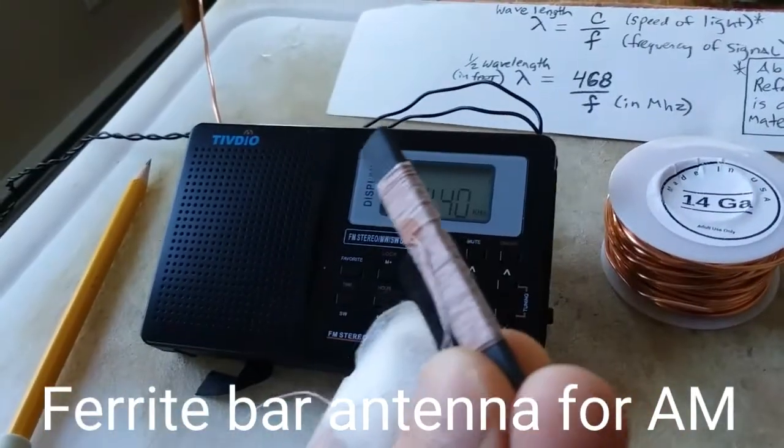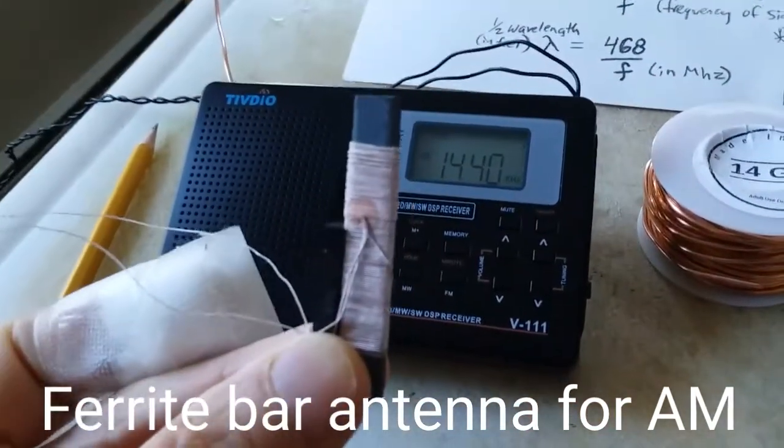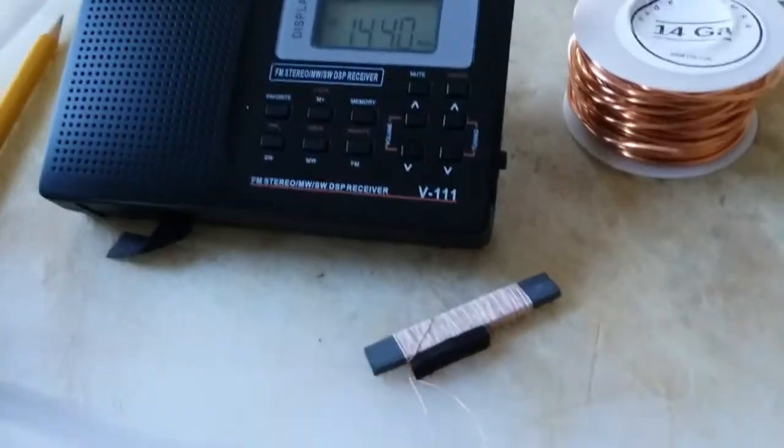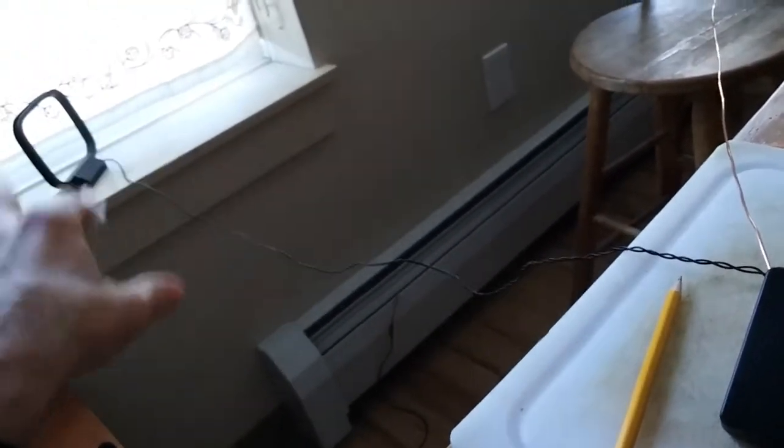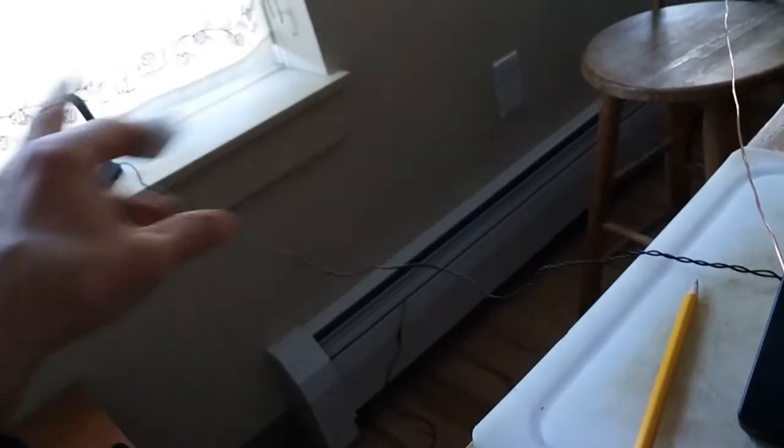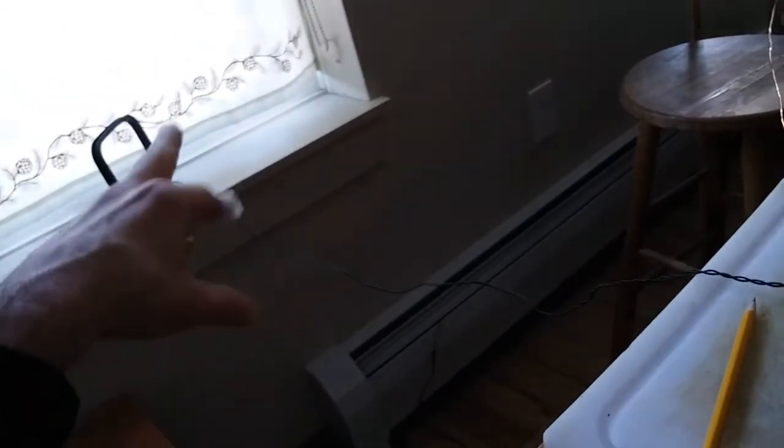The onboard ferrite bar antenna is pretty good, but I thought I would try to upgrade it with this external eight coil, an eight loop coil external antenna right there, about a five inch diameter.